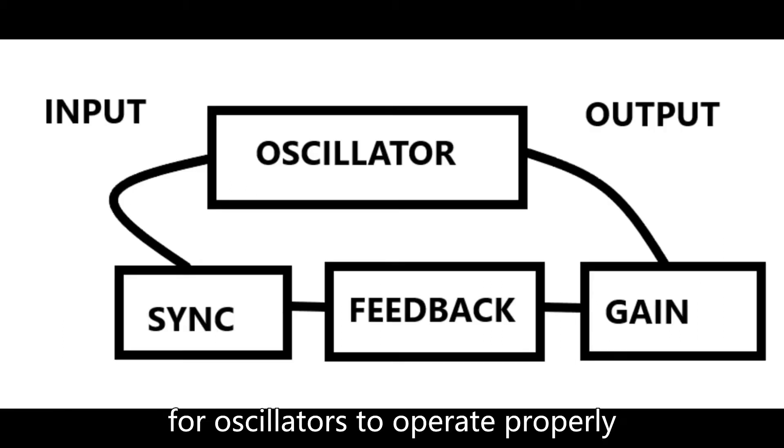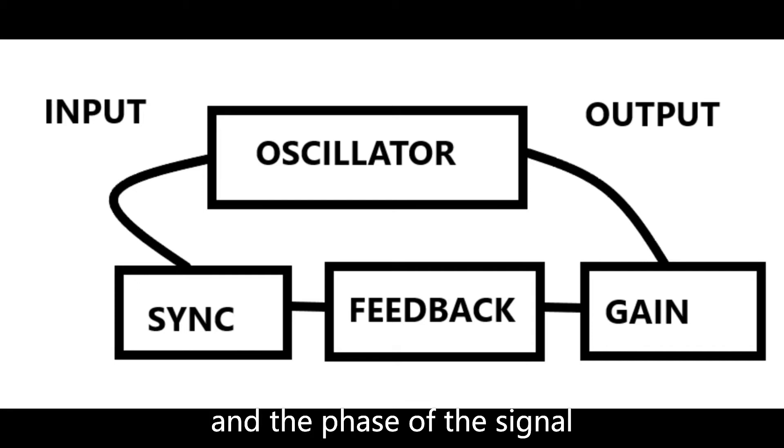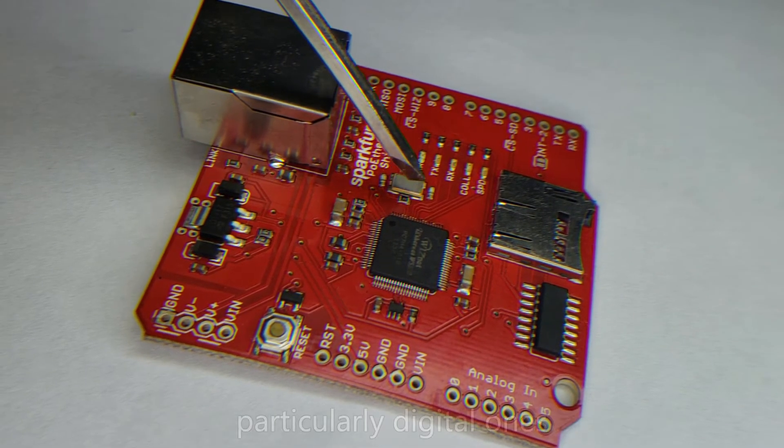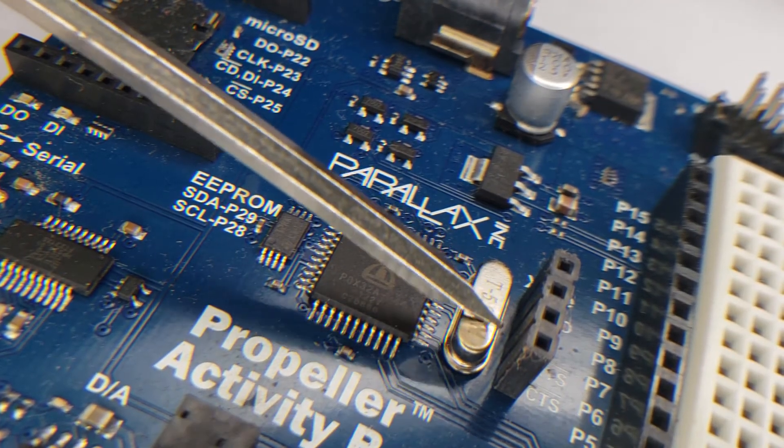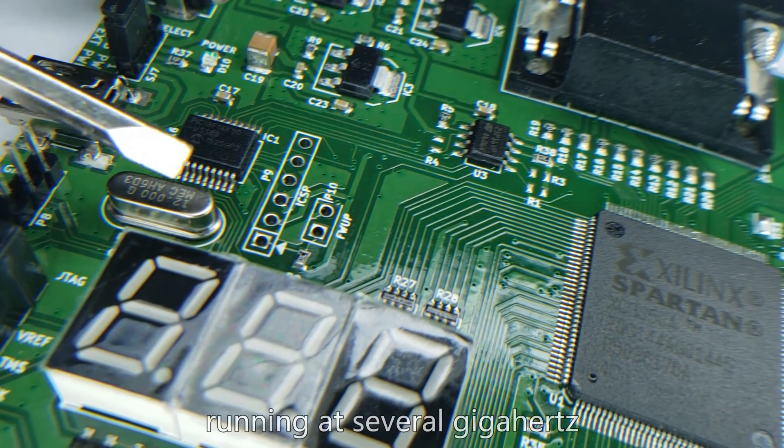For oscillators to operate properly, in addition to feedback, there must also be enough gain in the feedback part and the phase of the signal that is put back in the circuit must be in sync. Oscillators are very important electronics, particularly digital ones, from microcontrollers and FPGAs running at tens of megahertz to microprocessors running at several gigahertz.